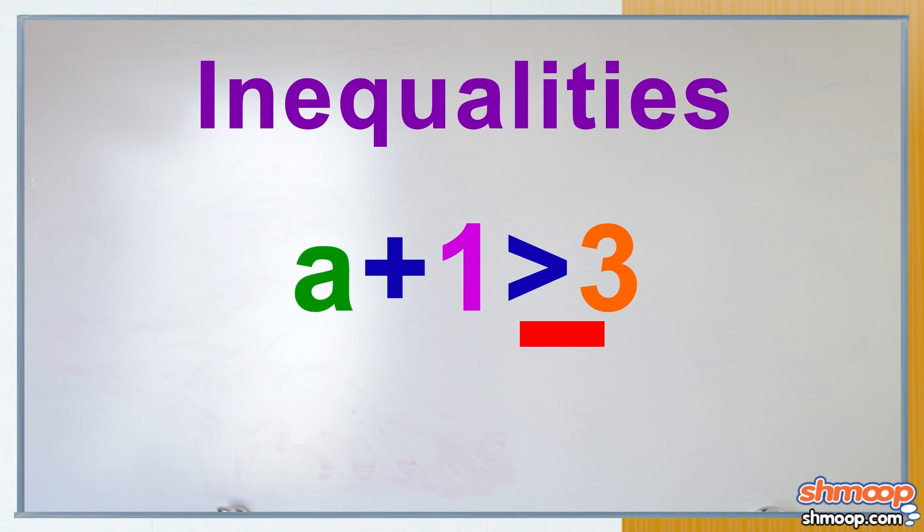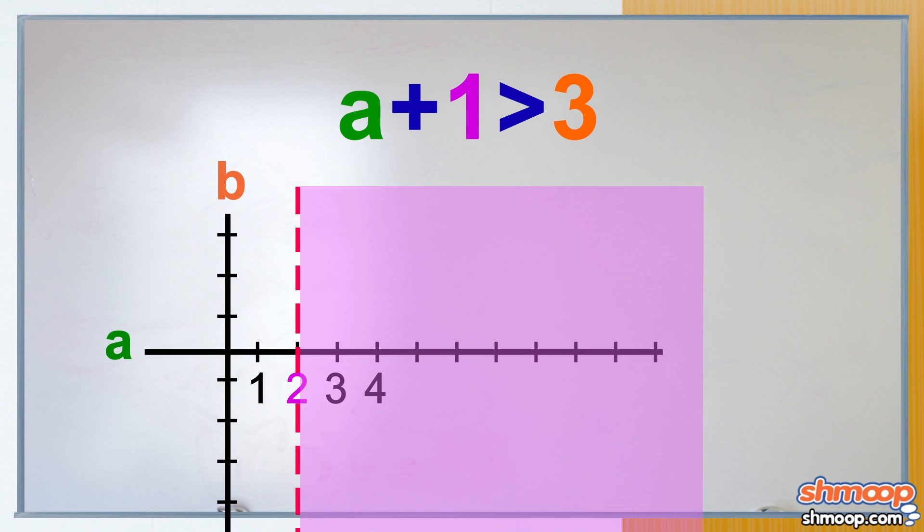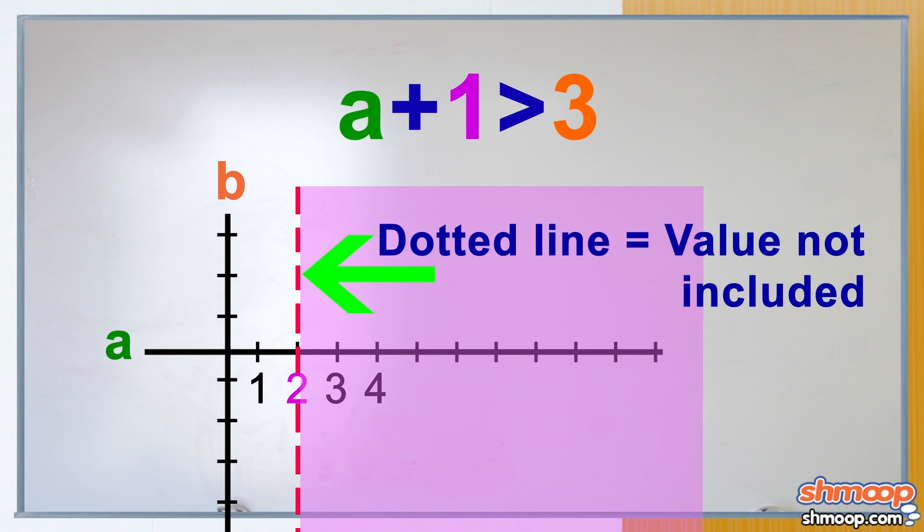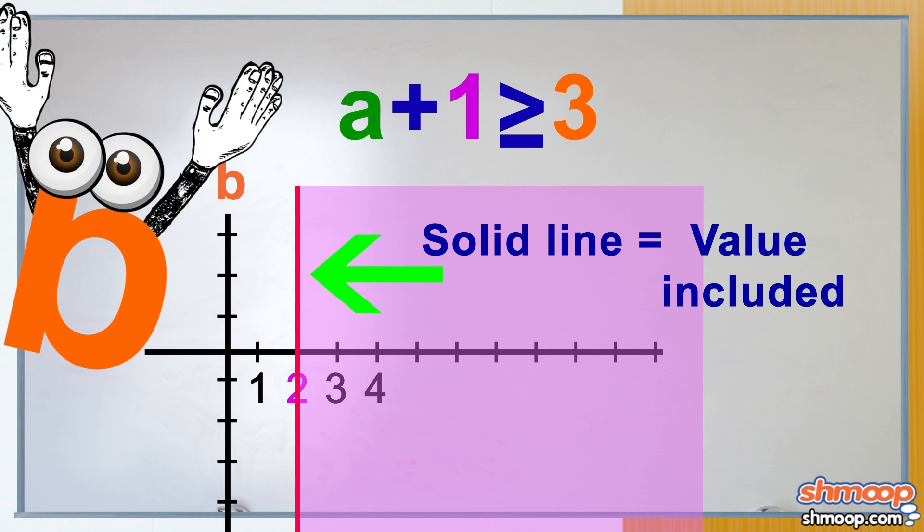For example, if A plus 1 is greater than 3, then A is the range of all values that, when added to 1, outputs a value greater than, but not including 3. We'll turn that sucker into a greater than or equal to symbol, and now you can include 3. You'll be so thrilled.